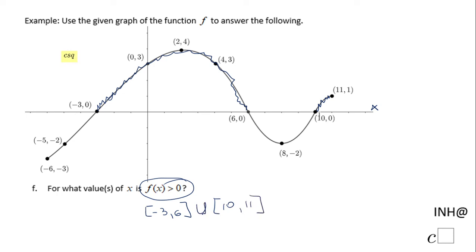And you may need to put this sign which means union. On these two intervals, the function is over the x-axis which means is positive.